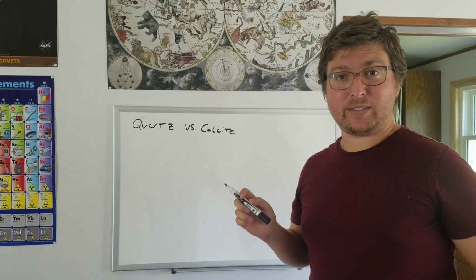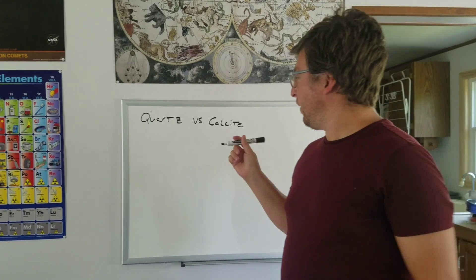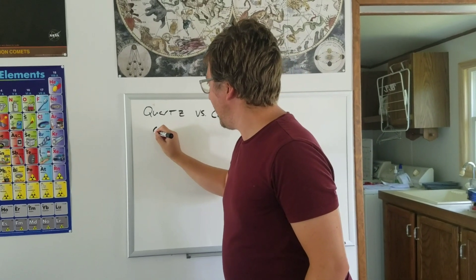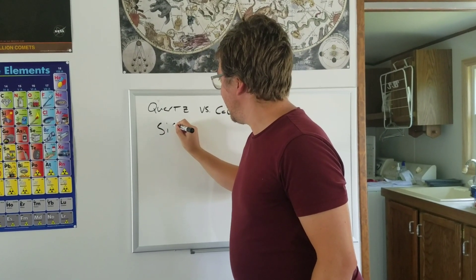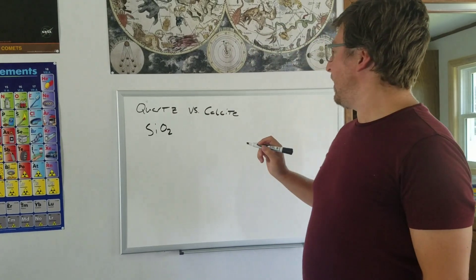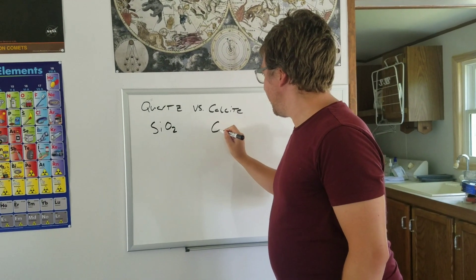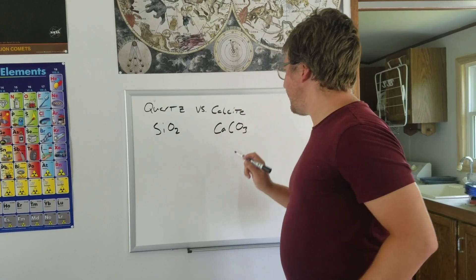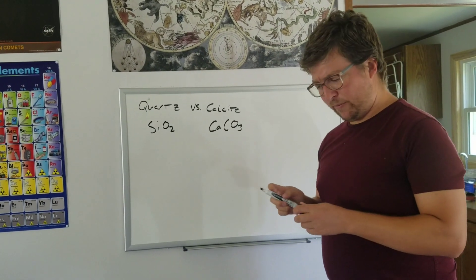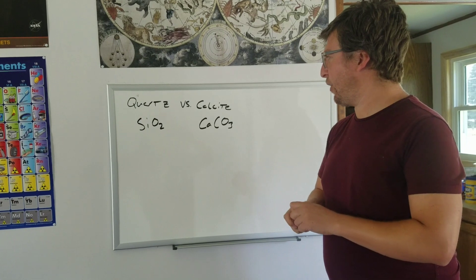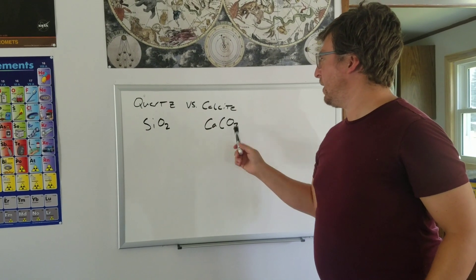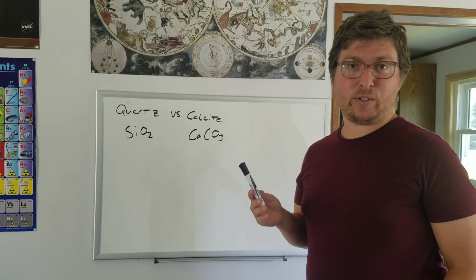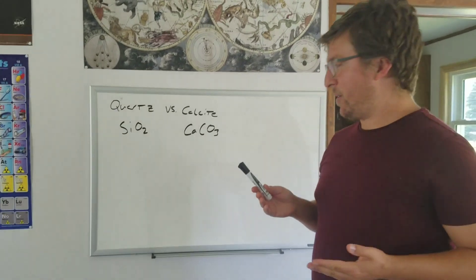There are other ways to tell, too. The key difference between quartz and calcite: quartz is SiO2, silicon dioxide. Calcite is CaCO3, calcium carbonate. They really have nothing in common except for oxygen and a chemical structure. However, they both are very common on the Earth's surface and they both form white minerals.